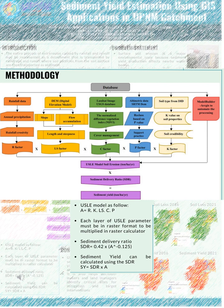Each layer of the RUSLE parameter must be in raster format to be multiplied in the raster calculator. The soil erosion map will be multiplied with the sediment delivery ratio, where the equation is: SDR = 0.42 × Area^(−0.125). Sediment yield can then be calculated using the SDR: Sediment Yield = SDR × Annual Soil Erosion.